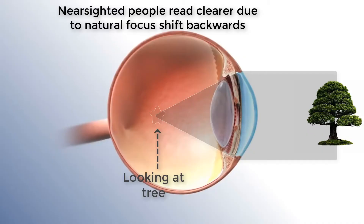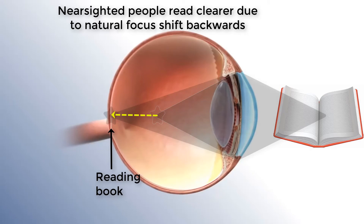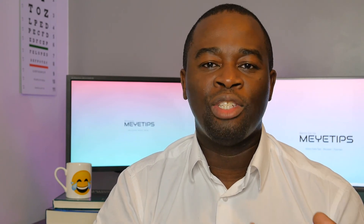Why do people with nearsightedness have the ability to see close up? Every time we look at an object close up, we get a natural shift of light backwards. If you're nearsighted, this shift actually brings light closer to the retina, making things clearer. It may result in light focusing very close to or on the retina, and the crystalline lens may help with a little accommodation so you can still see perfectly well. That's why nearsighted people tend to do very well and may never need reading glasses — they can still read and see well close up through most of their life, depending on how nearsighted they are.